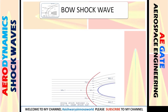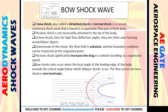A bow shockwave is also known as a detached shockwave or curved normal shockwave. Like all shockwaves, it occurs in supersonic flow and has adiabatic properties. Across the bow shockwave, the speed changes from supersonic to subsonic, while pressure and static properties increase.